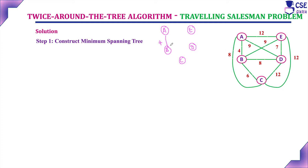Include edge A to B with cost 4. Every time you include an edge, ensure it does not form a cycle. The next minimum cost edge is 6, so include B to C. Then the minimum cost edge is B to D at cost 8, which does not form a cycle. Next is cost 7, then 8. Considering edges of cost 9, including either of those edges would form a cycle, so we eliminate them. Edge A to C would also form a cycle, so we do not include it.